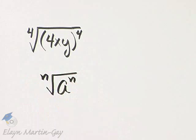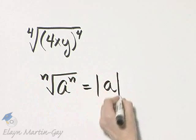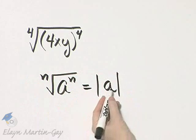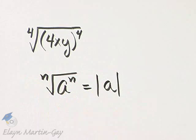and n is some positive even number, this is the absolute value of a. And I write the absolute value so that I am sure that the answer is not negative.